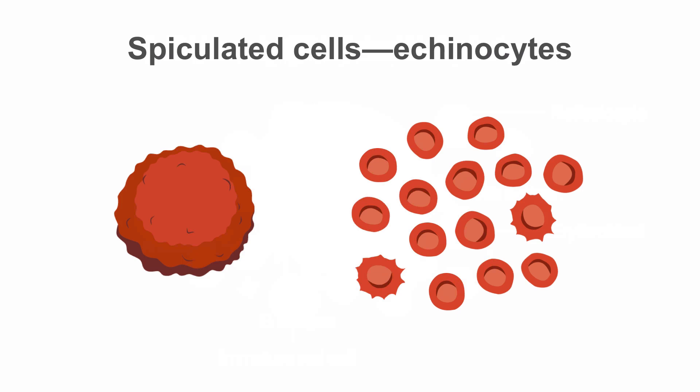Let us now move on to spiculated red cells. Spiculated cells describe a variety of cells all with spicules. Echinocytes possess 10 to 30 short blunt spicules. They may be seen with storage artifact, liver and kidney diseases, and pyruvate kinase deficiency.